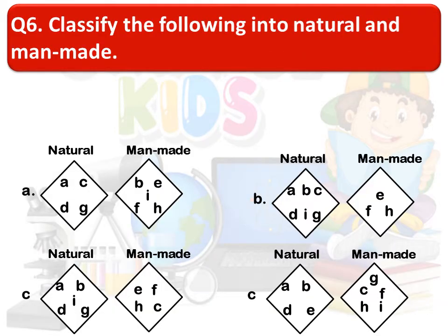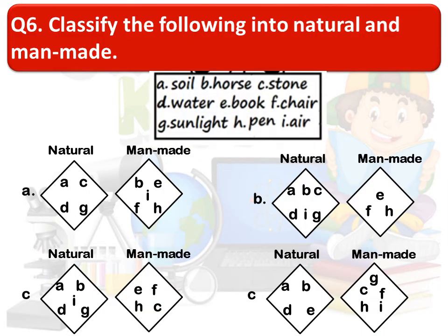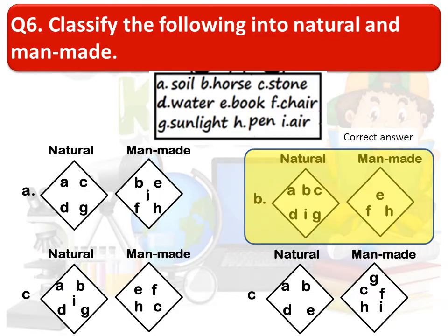The next question is: classify the following into natural and man-made — A: soil, B: horse, C: stone, D: water, E: book, F: chair, G: sunlight, H: pen, I: air. You can pause the video to think about the correct answer. The correct answer is option B.